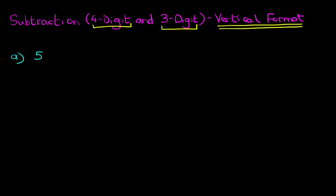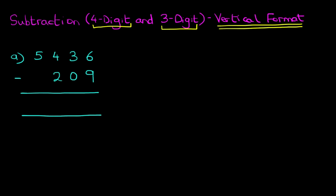What is 5,436 minus 209? I like to label the columns because I can explain this a lot simpler that way. So we've got units, tens, hundreds, and thousands. Okay, we're ready to go ahead and do the subtraction.